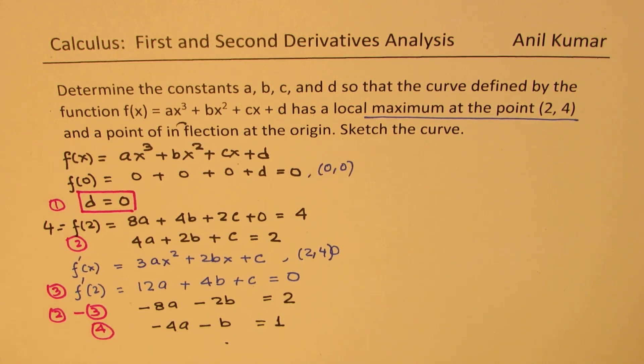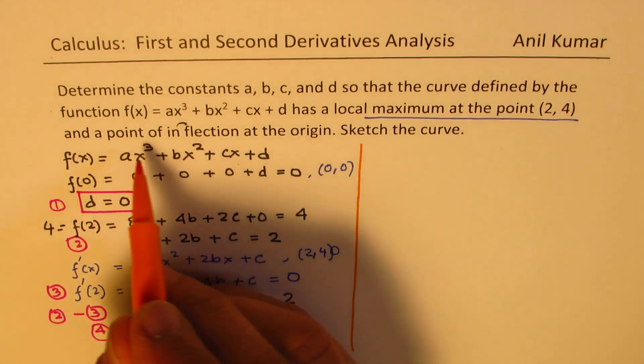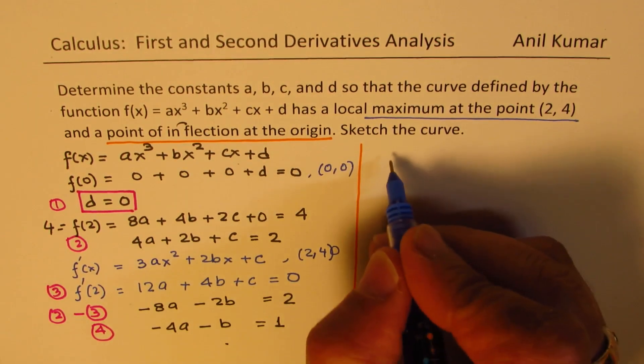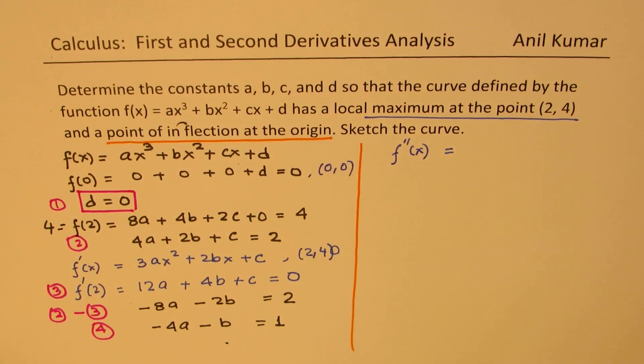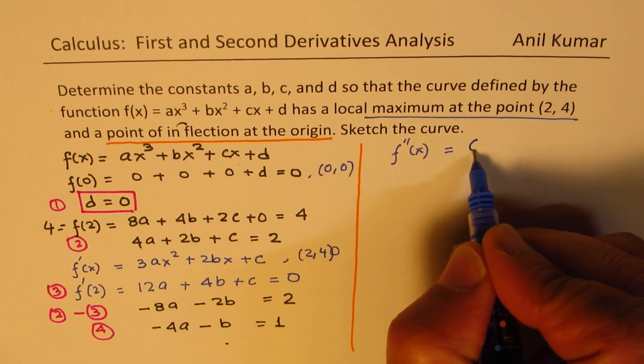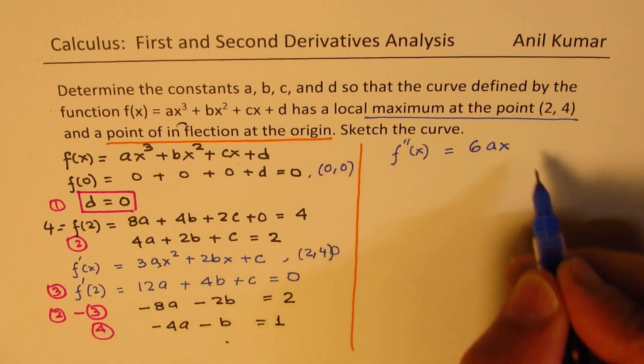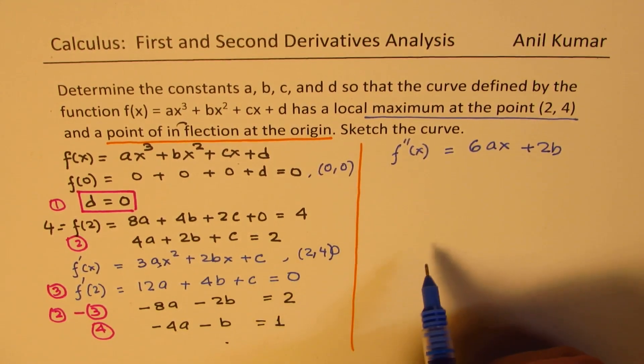Now, let us substitute the last condition given to us, which is we have a point of inflection at the origin. That is to say, the second derivative of the function will be 0 at origin. So first derivative is written here. We'll find the second derivative. We get 2 × 3 as 6ax, and here we get +2b. So we get that as our second derivative.